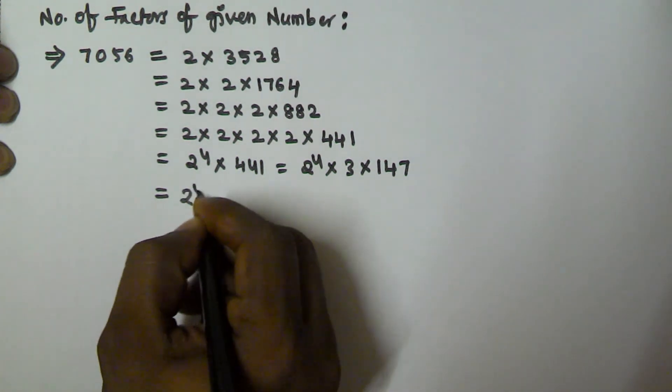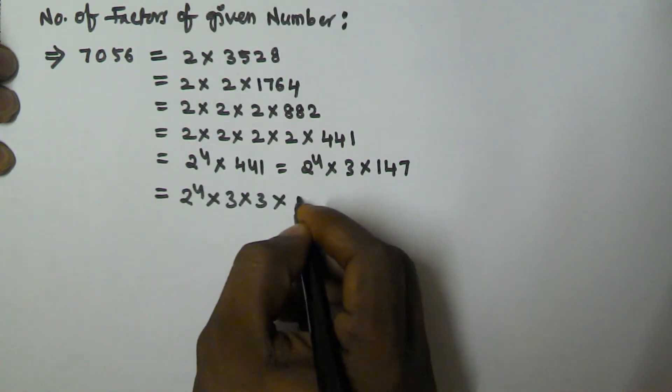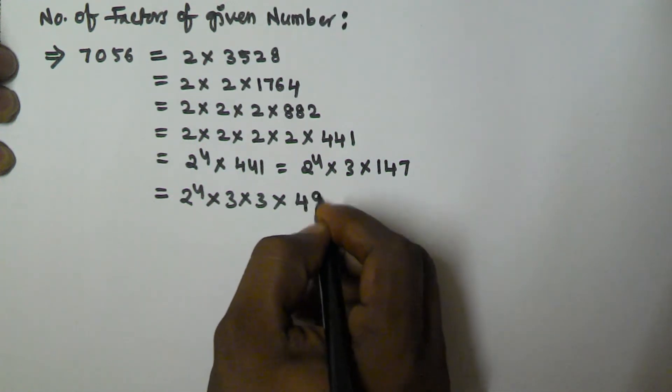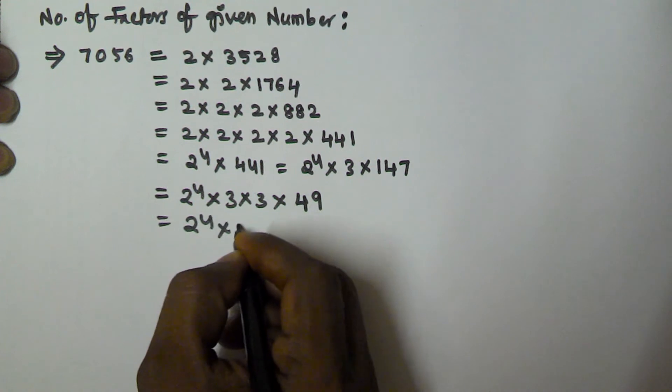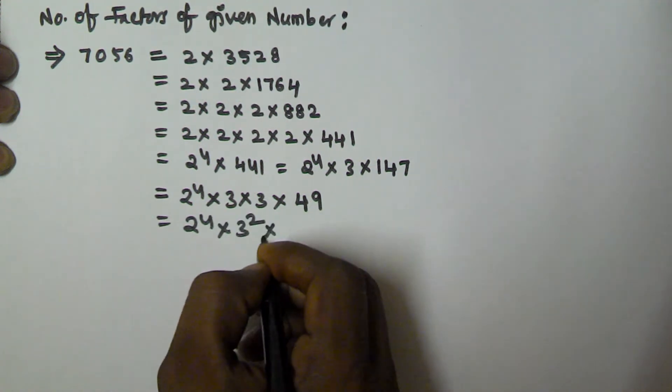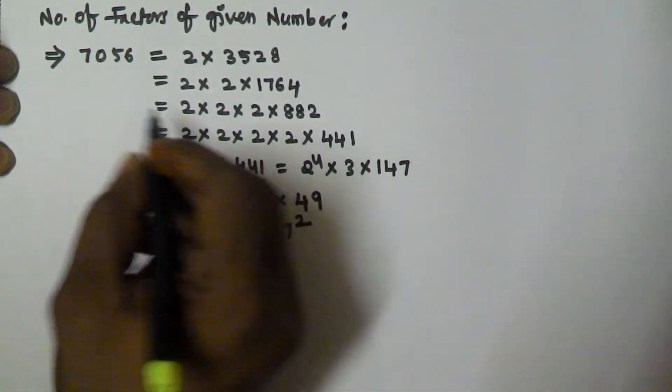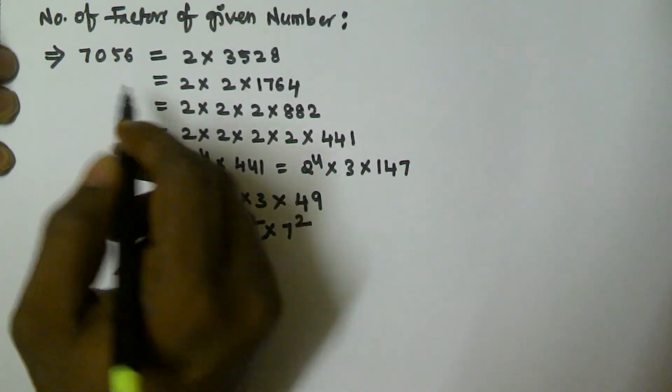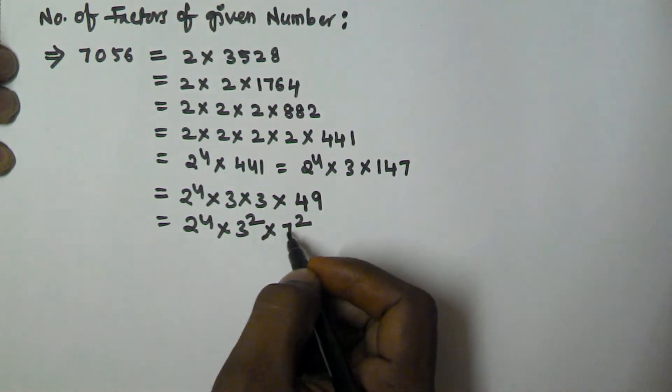147 equal into 2 to the power of 4 into 3 into 3 into 3. Okay, so 2 to the power of 4 into 3 square into 49 can be written as 7 square. So the total factors of 7056 are 2 to the power of 4, 3 square, and 7 square.